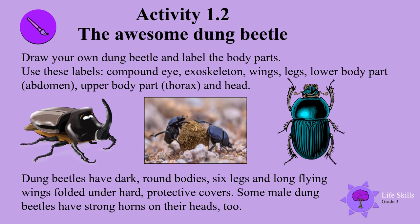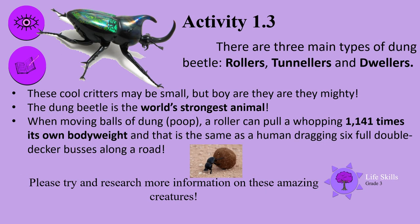Dung beetles have dark round bodies, six legs, and long flying wings folded under hard protective covers. Some male dung beetles have strong horns on their heads too. There are three main types of dung beetles: rollers, tunnelers, and dwellers. These cool critters may be small, but boy are they mighty. The dung beetle is the world's strongest animal — when moving balls of dung (poop), a roller can pull a whopping 1,141 times its own body weight. That's the same as a human dragging six full double-decker buses along a road. Please try and research more information on these amazing creatures.